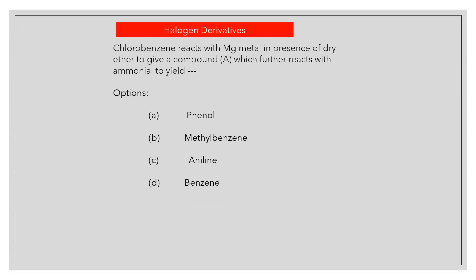Chlorobenzene reacts with magnesium metal in presence of dry ether to give a compound A, which further reacts with ammonia to yield? Answer D: Benzene.